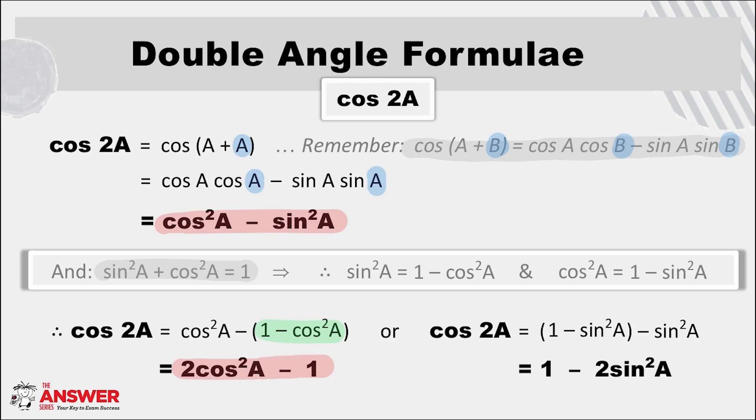Notice here that the cos term is first. Remember just like cos compound angles, cos is all about cos. Over here we can replace cos squared A with one minus sine squared A from the identity and this time it simplifies to one minus two sine squared A, a third way to expand cos of a double angle.